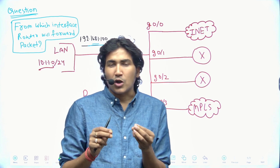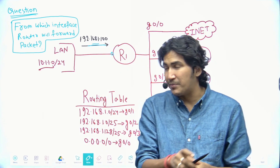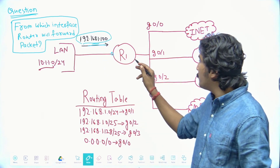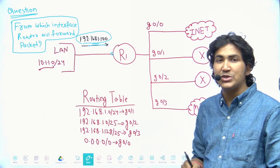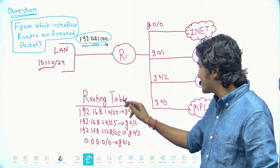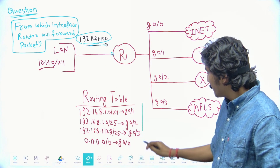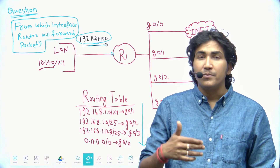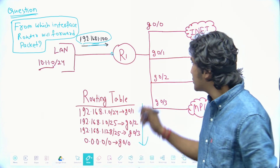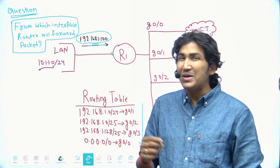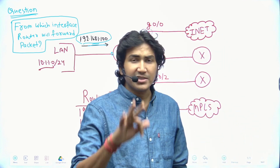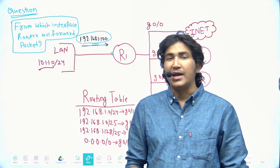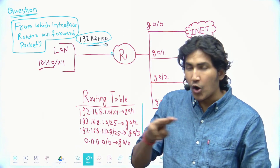When the router receives a packet, it compares the destination IP address with its routing table. The destination IP address 192.168.1.100 is matching in all routing table entries. For best route selection, the router performs three checks: first, longest prefix match; second, AD value; and third, metric.